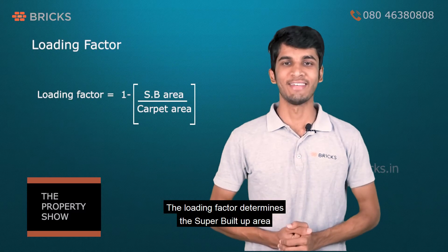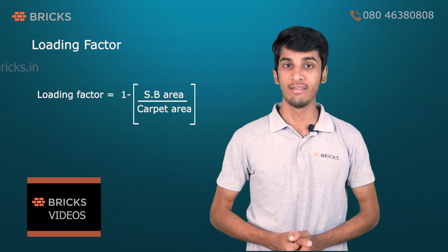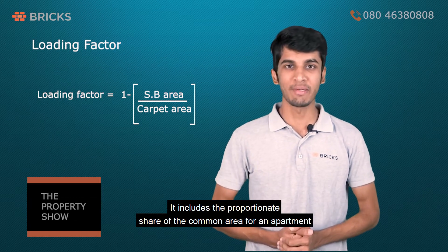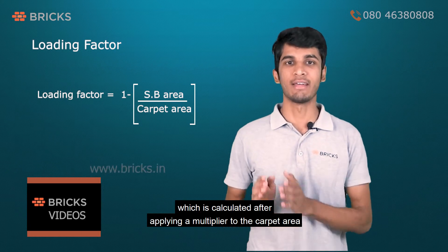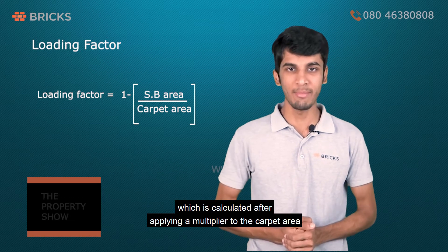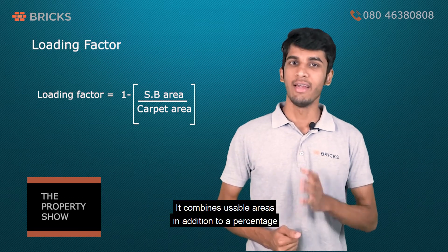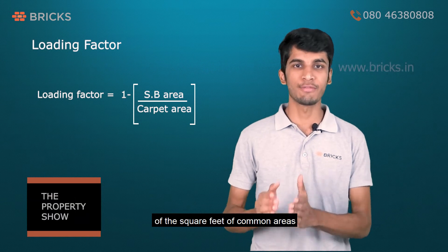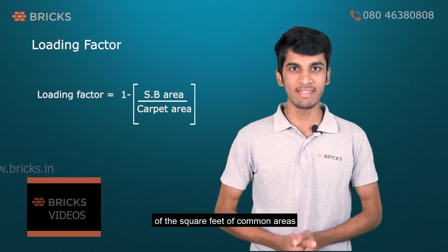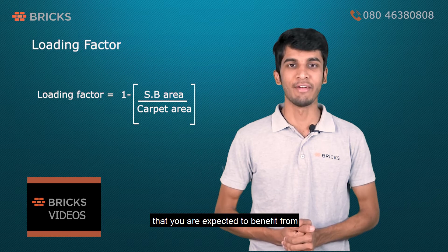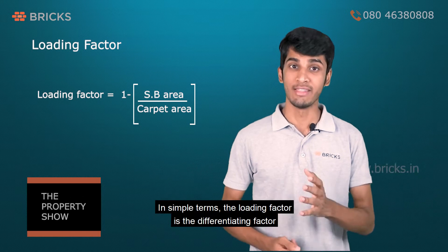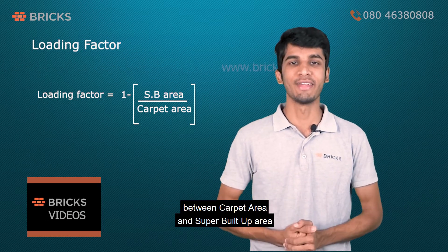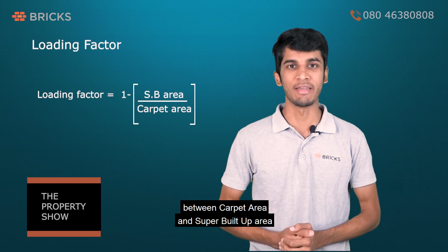The loading factor determines the super built-up area. It includes the proportionate share of the common area for an apartment, which is calculated by applying a multiplier to the carpet area. It combines usable areas in addition to a percentage of the square feet of common areas that you are expected to benefit from. In simple terms, the loading factor is the differentiating factor between carpet area and super built-up area.